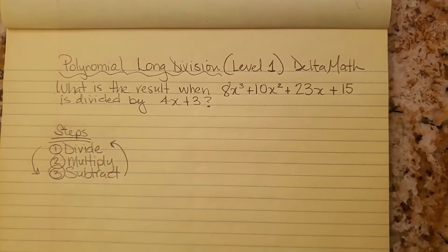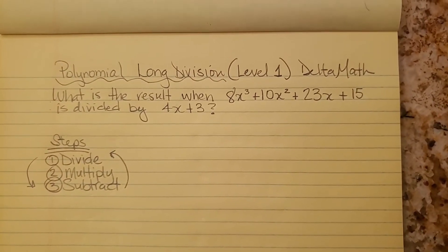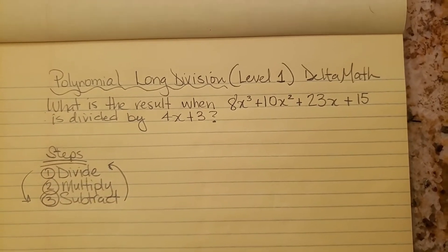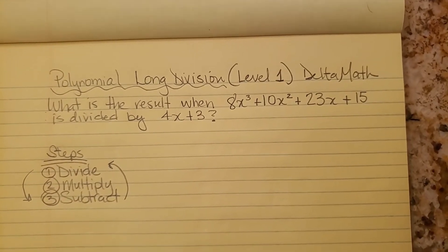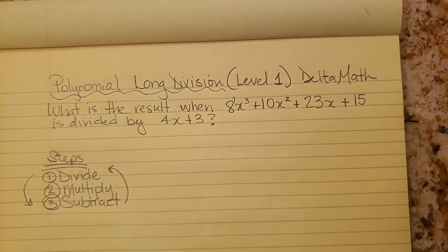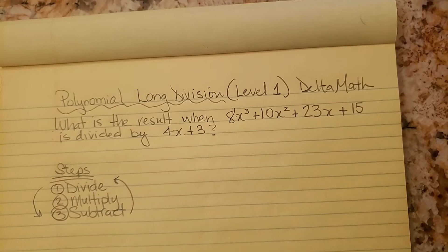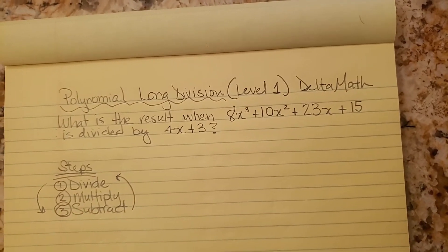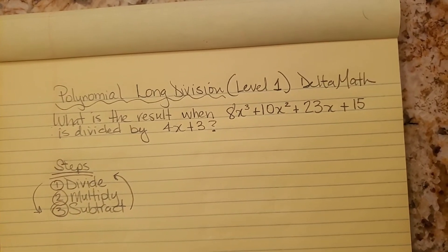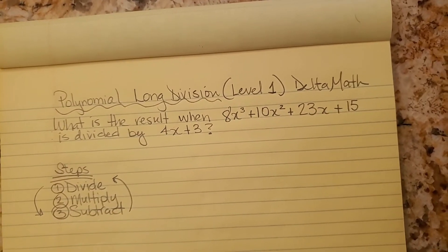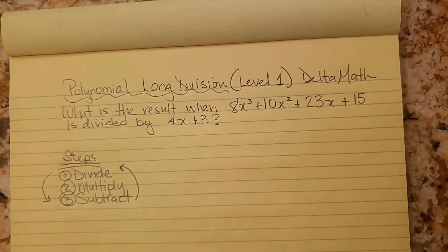Hello everyone. Today we are doing polynomial long division level 1 from Delta Math. The question is what is the result when 8x cubed plus 10x squared plus 23x plus 15 is divided by 4x plus 3.